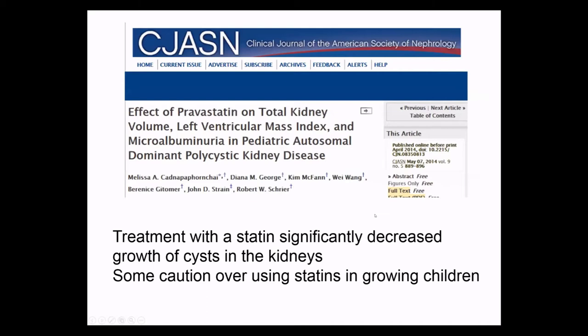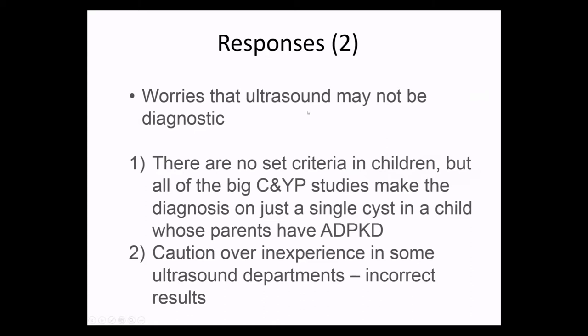Regarding worries that ultrasound may not be diagnostic: in adults, you have to have three cysts, but in children you don't, because cysts develop over time — you start with one or two cysts, then they develop. There aren't any set criteria in children, which is a gap in the literature we should address. But all the big studies in children and young people make the diagnosis on just a single cyst. So if you have a family where the parents have ADPKD, you do a scan and find a single cyst, all of the big studies regard that as positive proof that that child has ADPKD. There does need to be some caution because it's difficult in wriggling children, and when you're not used to scanning children, diagnosing small cysts may involve coming to a specialised centre to make sure you get the right results.